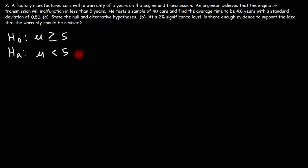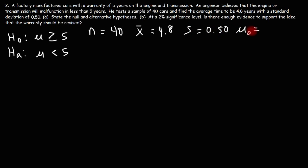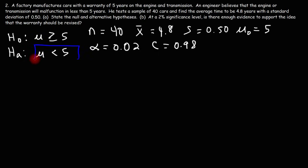For part B: at a 2% significance level, is there enough evidence to support revising the warranty? The sample size is 40, the sample mean is 4.8 years, the sample standard deviation is 0.5, and mu-naught is 5. The significance level alpha is 0.02, meaning the confidence level is 98%. Since the alternative hypothesis specifies the mean is less than a value, this is a left-tailed test, so we shade only the area to the left.